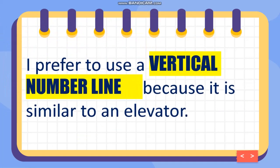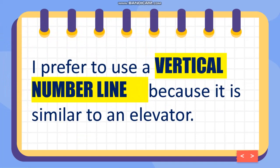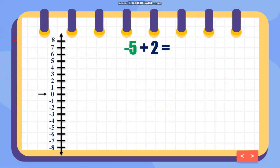I prefer to use a vertical number line because it is similar to an elevator. Using the same given, I have negative 5 plus 2. This is an integer elevator. This is the elevator entrance, which is starting from 0.